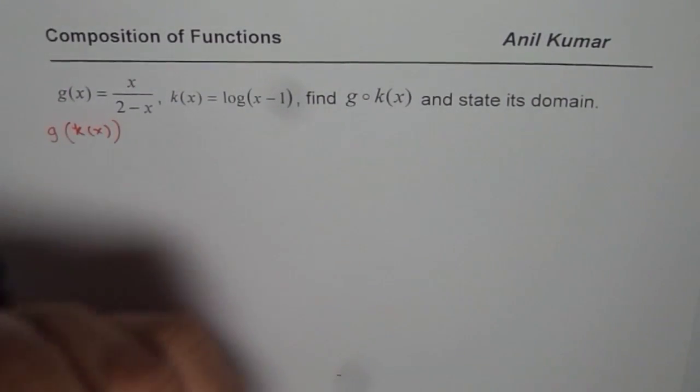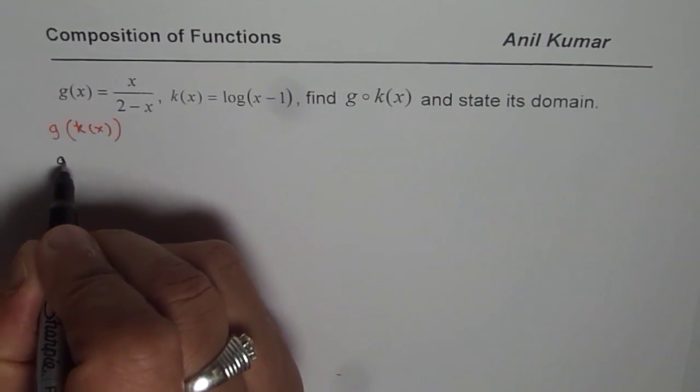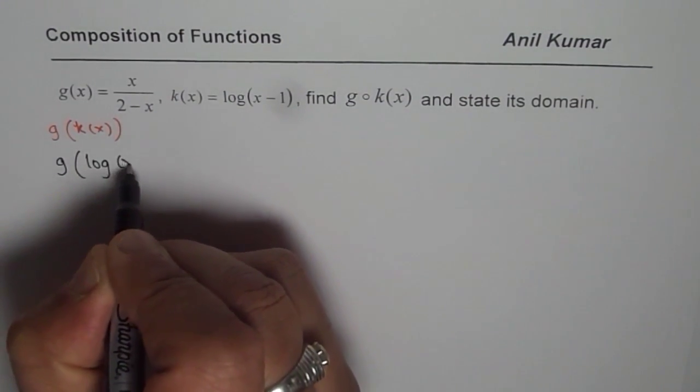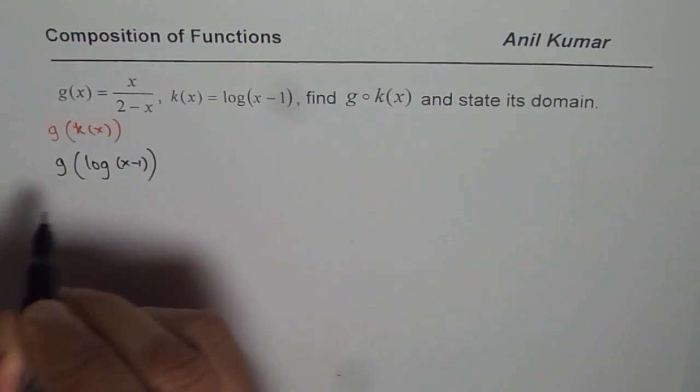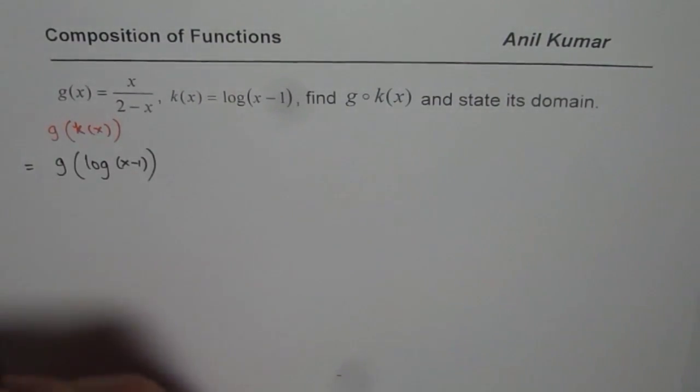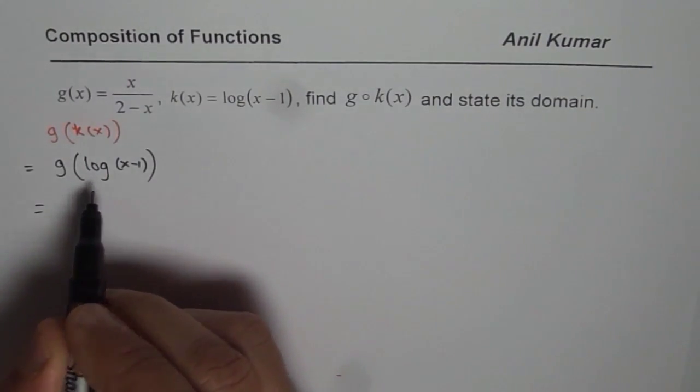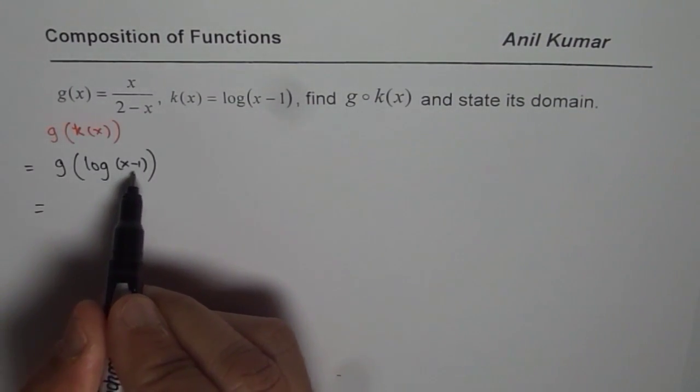So g(k(x)) really means that we want to do g of, and what is k(x)? k(x) is log(x-1). So we could write g(k(x)) as this. Now g(x) is x divided by 2 minus x. We will replace the x with log(x-1).